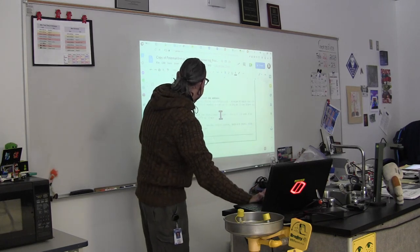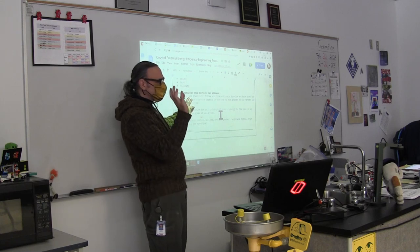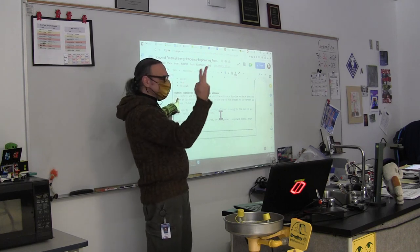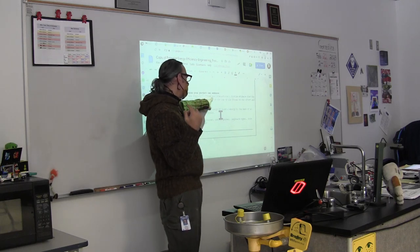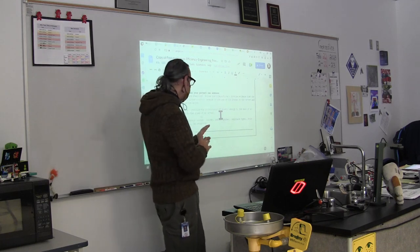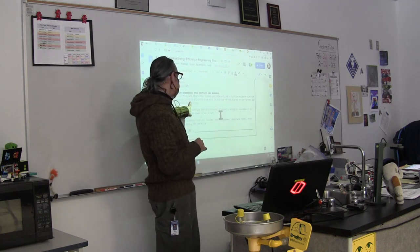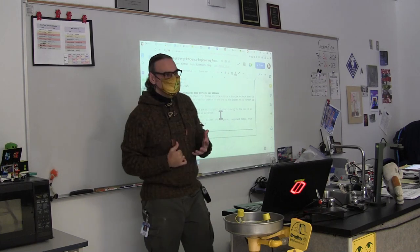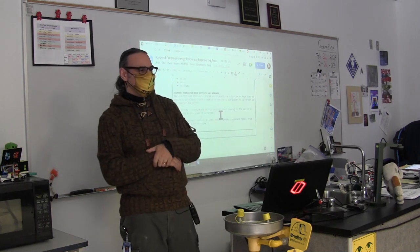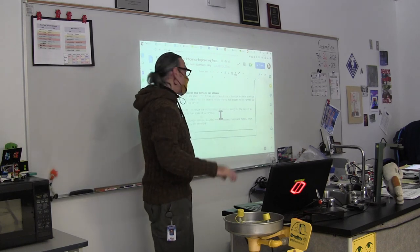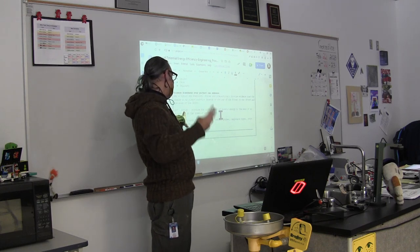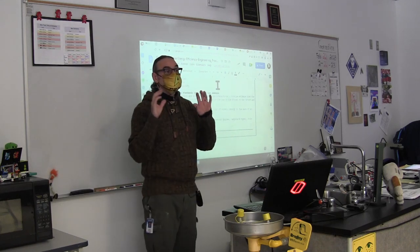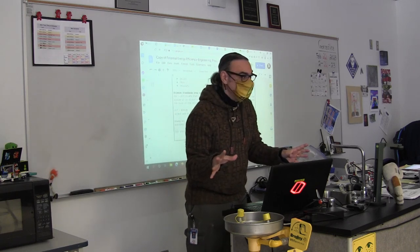We've got a couple of science standards this project targets. PS2 — physical science standard number two — motion and stability, forces and interactions: provide evidence that the change in an object's motion depends on the sum of the forces on the object and the mass of the object. We're going to prove that. And PS3 — physical science standard number three on energy: describe the relationship of kinetic energy to the mass of an object and to the speed of an object. You're going to learn that too.